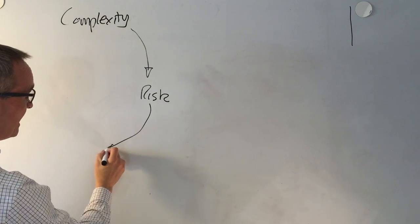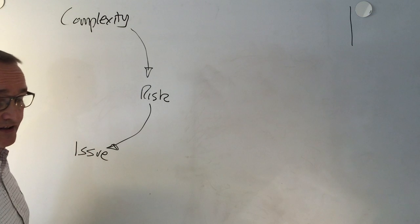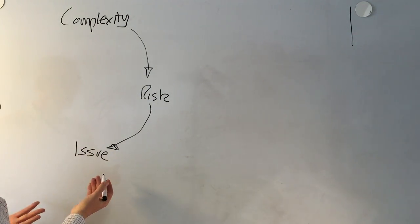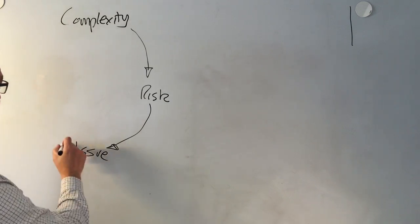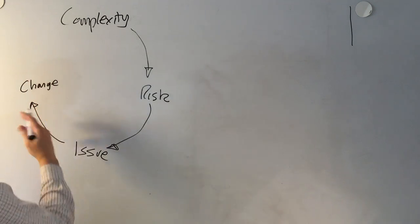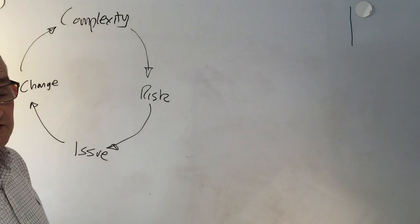Risk, when the probability becomes zero and when they actually happen, the risks then turn into issues. Typically, people react to the issues by changing, and when change occurs, you therefore typically increase the complexity in the project.